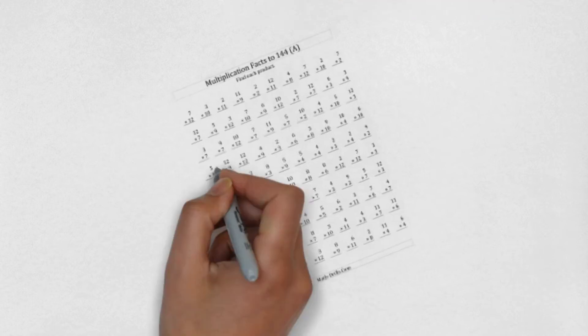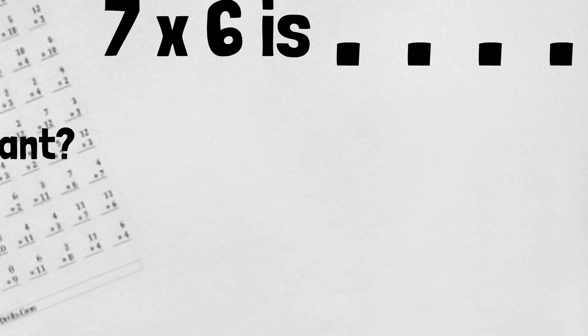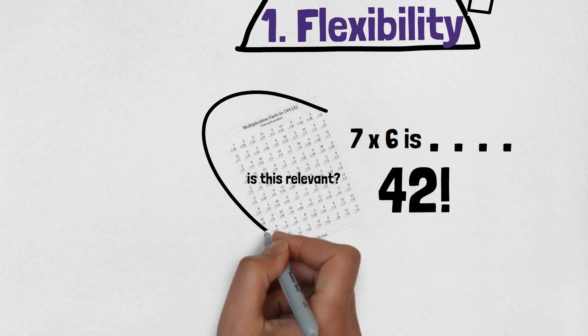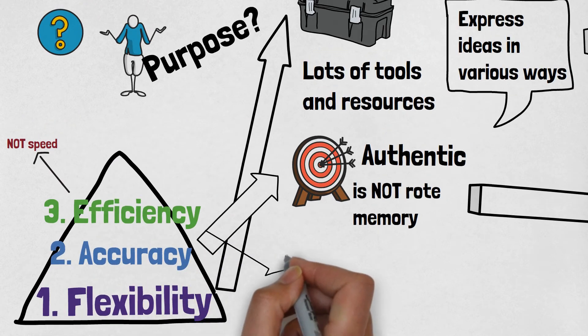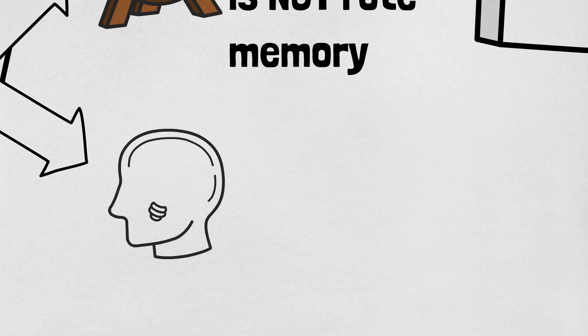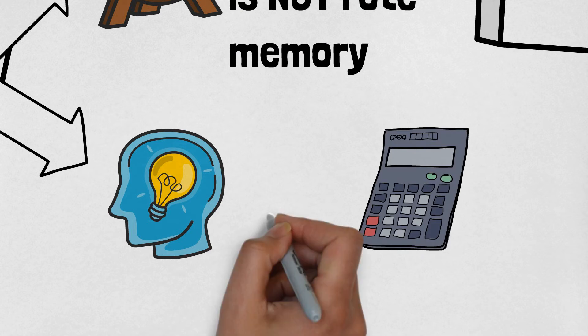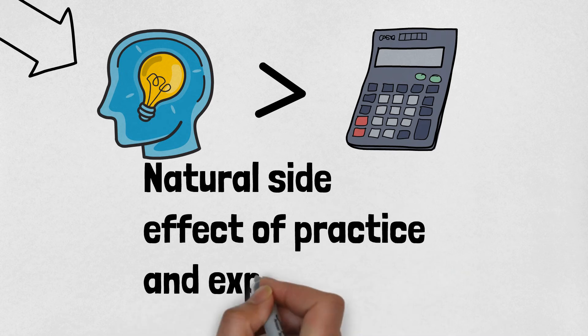However, the speed needed to be successful here does not translate to real life. If I need 5 seconds in real life to determine that 7 times 6 is 42, most won't even notice and I will be just fine. But 5 seconds per item on an assessment like this would be seen as a failure. So, as we work towards efficiency, when it comes to deep understanding and calculation for no other purpose, thinking is still more important. Efficiency should be the natural side effect of practice and exposure.